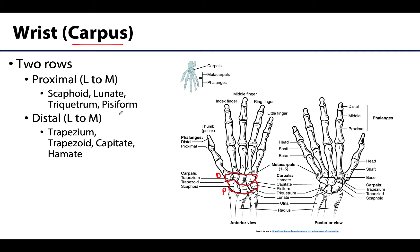From lateral to medial, the proximal row has the scaphoid, the lunate, and the triquetrum — which is somewhat deep because the pisiform sits right on top of it. I love the pisiform because it is an example of a sesamoid bone; it forms in the flexor carpi ulnaris tendon and is one of the named sesamoid bones of the body, the patella being the other. The distal row has the trapezium, the trapezoid, the capitate — the largest carpal bone — and the hamate.